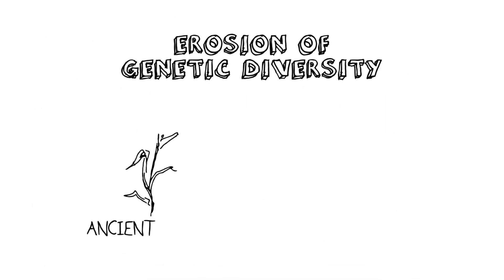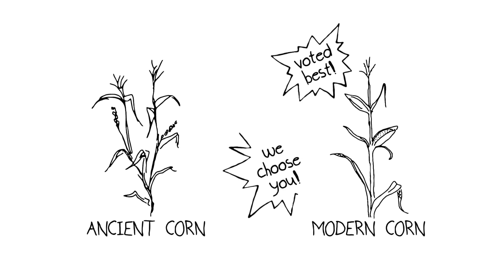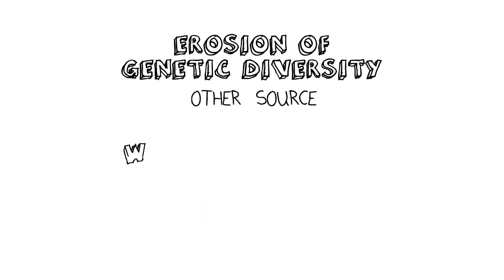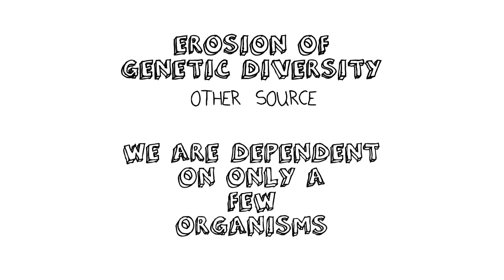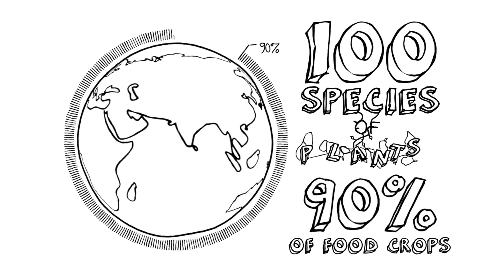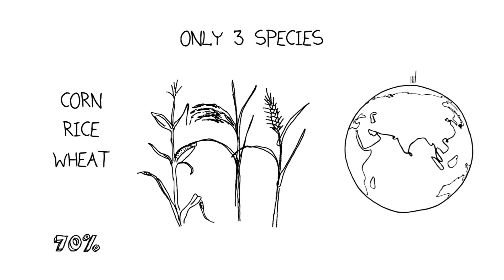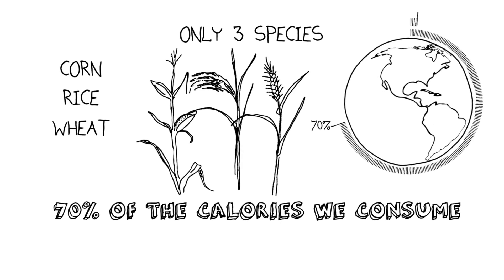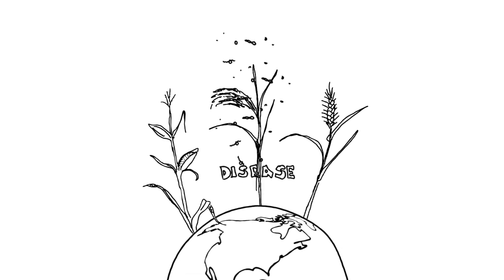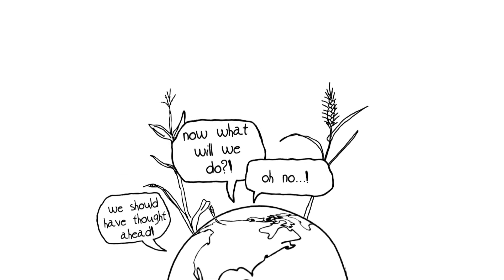The erosion of genetic diversity in agriculturally important species can come in two forms. One is due to artificial selection for special traits that humans find desirable, to the exclusion of other traits. The other source of erosion is that we've focused our dependence on only a few organisms. For example, only about 100 or so species of plants account for 90% of our food crops, and only three different species — corn, rice, and wheat — account for something close to 70% of the calories consumed by humankind, including 50% of the plant proteins we eat. What if some disease attacks any of these basic sources of our nutrition and those plants have no genetic resistance? The lack of genetic diversity could have dire effects on our own survival.